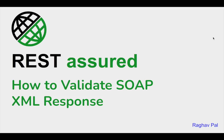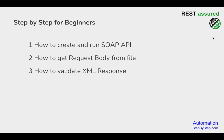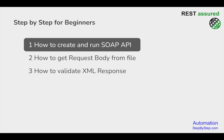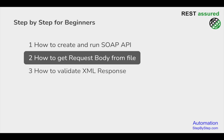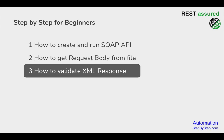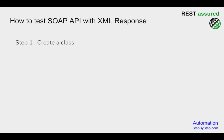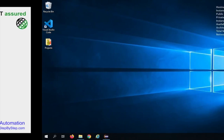Hello and welcome to this session. I'm Raghav and in this session we are going to learn step by step from scratch how to create and run a SOAP API in REST Assured. We will also see how we can get a request body of the API from a file and then finally how we can get and validate our XML response. So let's get started.